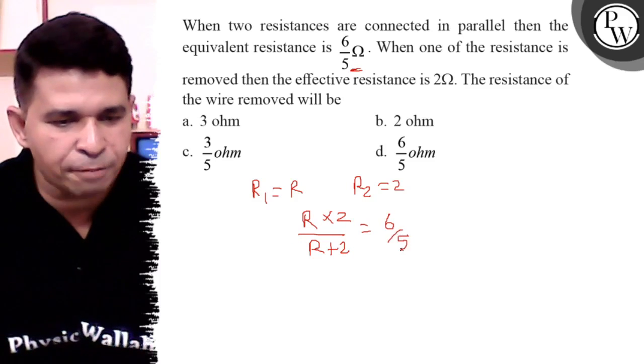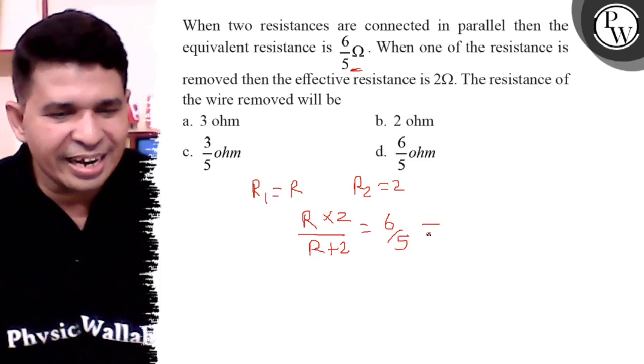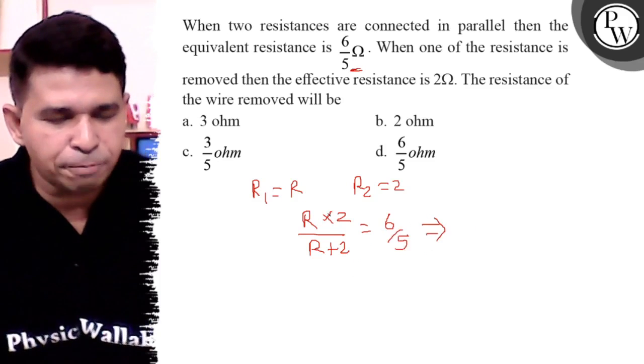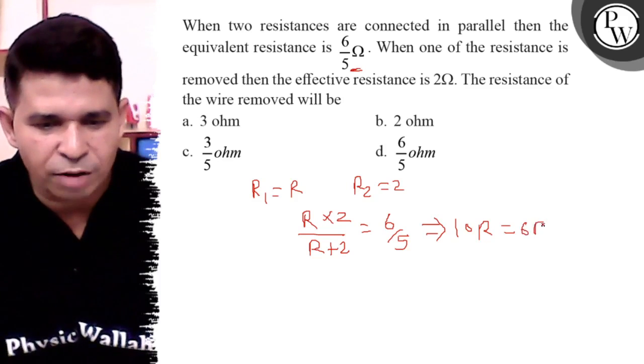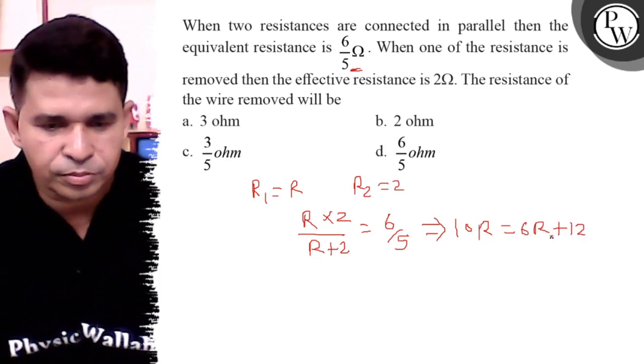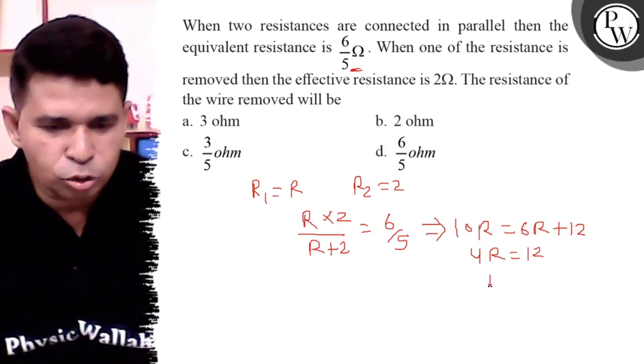It is given 6/5, so cross multiplying, 2R times 5 gives 10R, which equals 6R plus 12. So 4R is equal to 12.